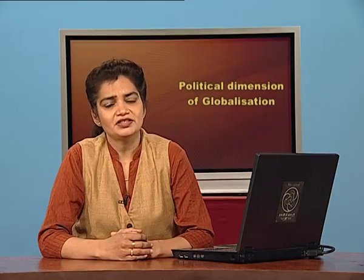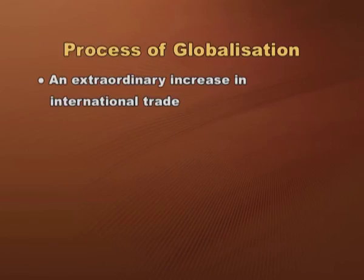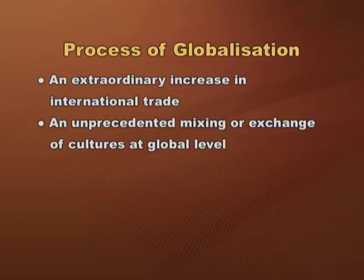Today, we will discuss about political dimensions of globalization which includes global governance and the emergence of international organizations and institutions. The process of globalization involves two things. The first is an extraordinary increase in international trade and the second is an unprecedented mixing or exchange of cultures at global level. Global interdependence and intensification in cultural, social and political sphere has been a result of emergence of global economic systems.